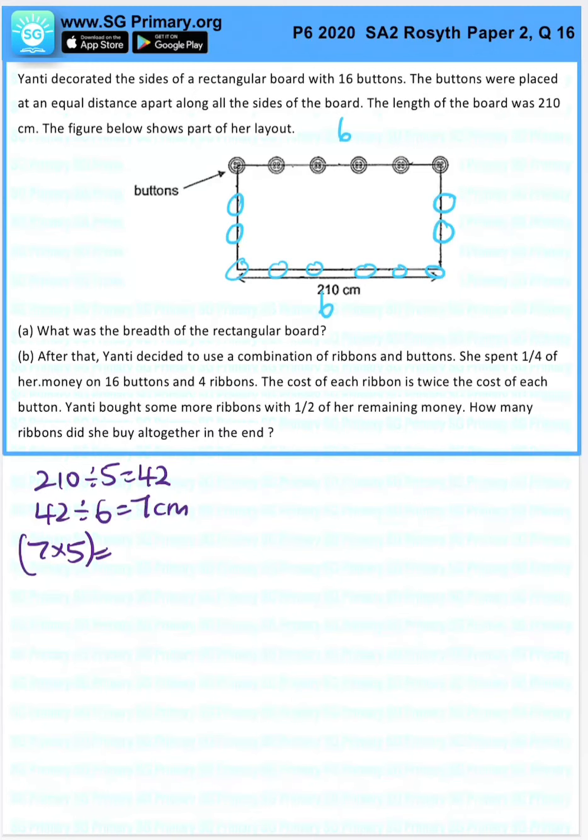This is the breadth. Sorry, this is the length plus 5 intervals, 210 centimeters. Because there are 5 diameters: 1, 2, 3, 4, half of this, half of this, 5. So 210 minus 35 is 5 intervals.